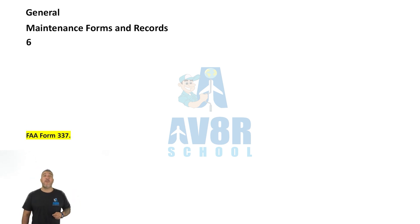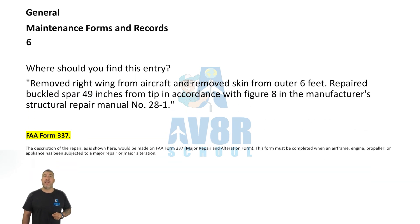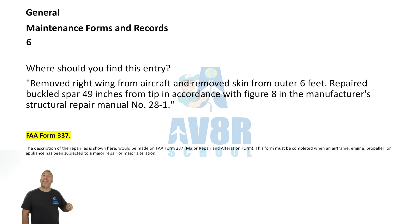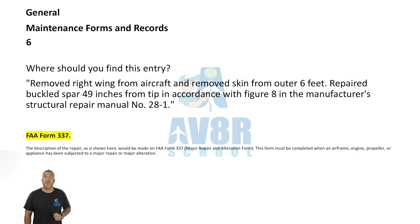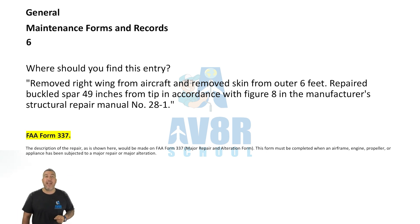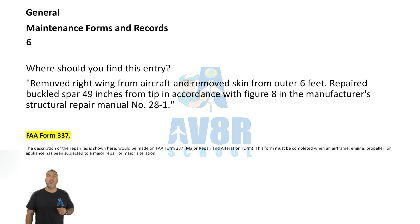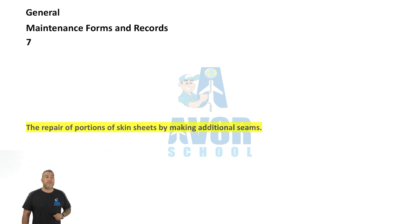Number six: FAA Form 337. Where should you find this entry: 'Removed right wing from aircraft and removed skin from outer six feet, repaired the buckled spar 49 inches from tip in accordance with the manufacturer's structural repair manual 28-1'? You will find it in an FAA Form 337.